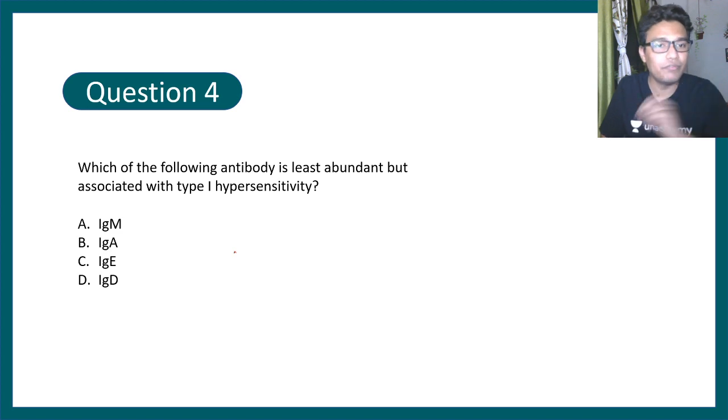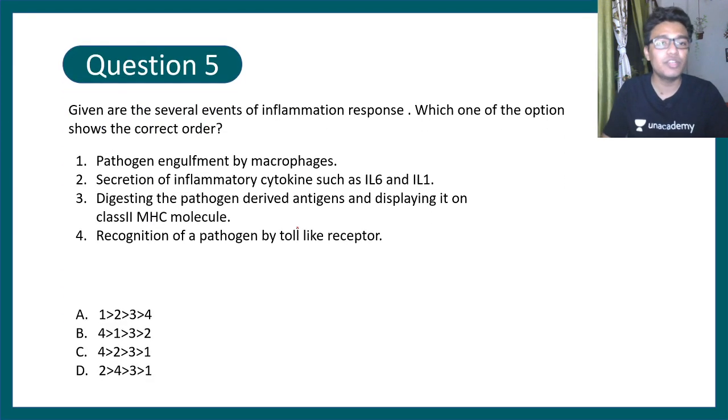Question number 4: which of the following antibody is least abundant but associated with type 1 hypersensitivity reaction, that means allergy? The correct answer is, yes, you guessed it correctly, option C. IgE is least abundant but it's important for type 1 hypersensitivity or allergic response.